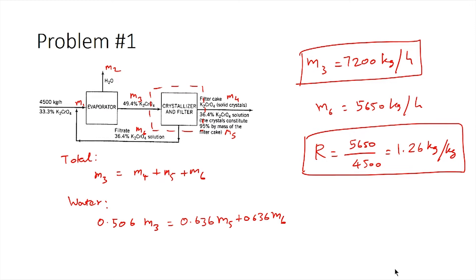This approach works efficiently because we had composition information about streams entering and leaving the overall system. If we have composition information for streams crossing a system boundary, we can use that system to perform calculations. Drawing the system boundary so that streams with known compositions cross it makes solving these problems much easier.